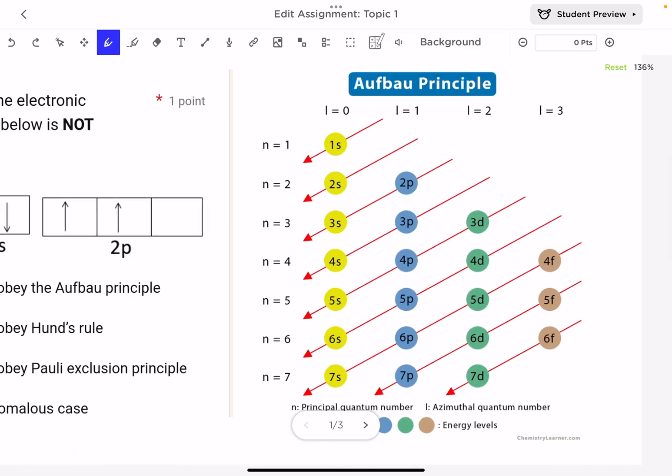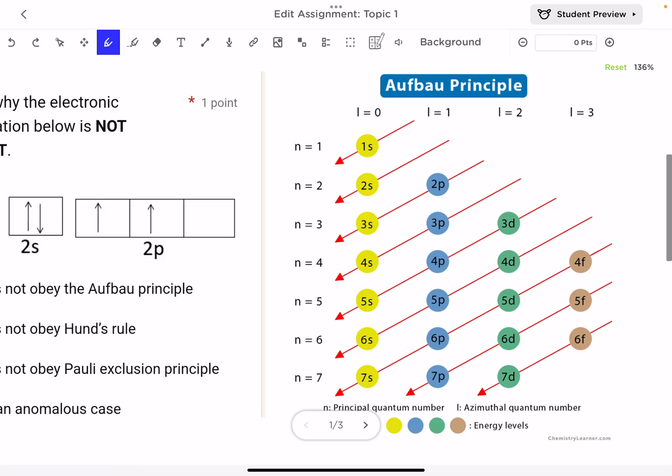When we are writing an electron configuration, we need to follow the order specified by Aufbau principle. First the electron will fill the 1s, s can contain two electrons, and then move on. The next one is 2s. So if I'm writing an electron configuration, I would say 1s2, 2s2.